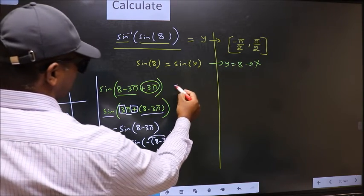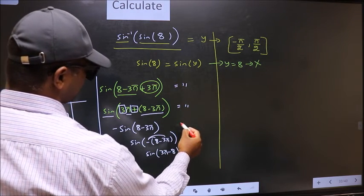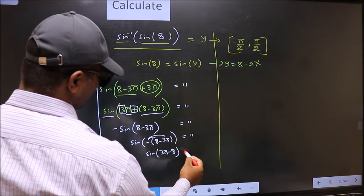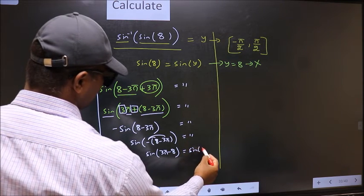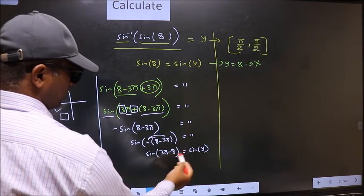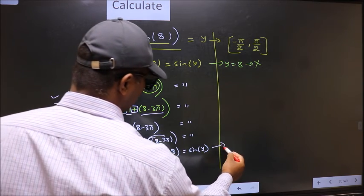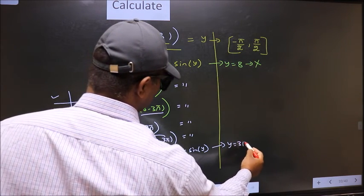And on the other side no change. Equal to sin y. Now comparing both sides we get y to be 3 pi minus 8.